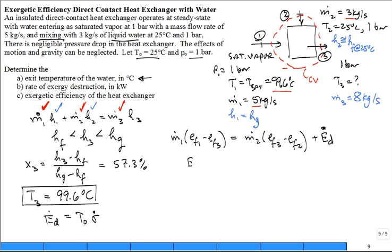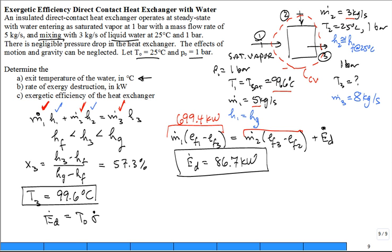And you can calculate this first term, the second term, and the exergy destruction. Either way, let me give you some numbers because I see I'm running a little bit out of time. The exergy destruction rate is going to be 86.7 kilowatts. What comes out of the hot fluid is 699.4 kilowatts. What goes into the other fluid stream is 879.7 kilowatts, meaning 86.7 kilowatts. That's right.